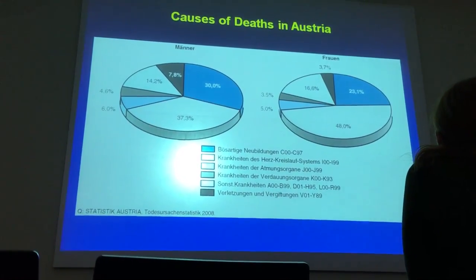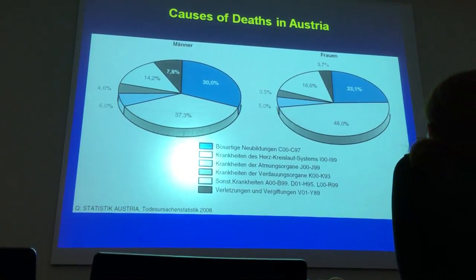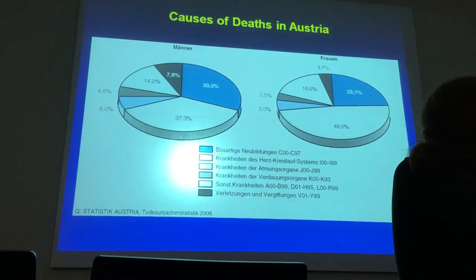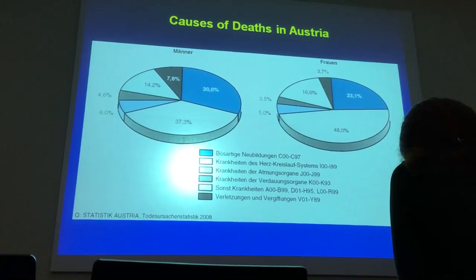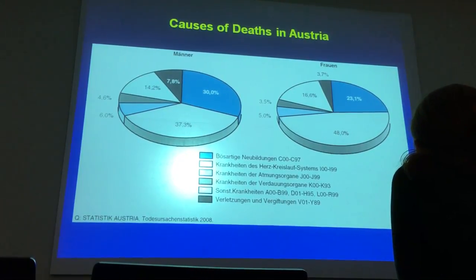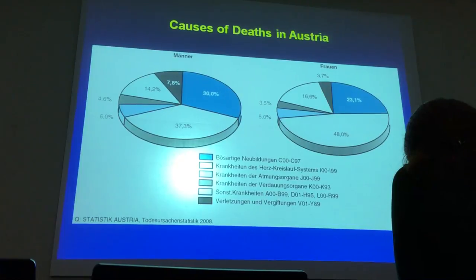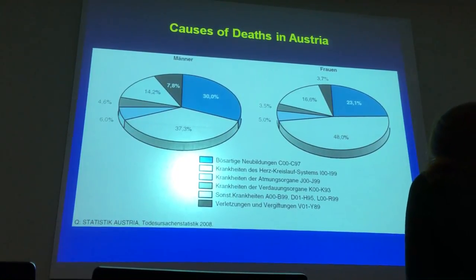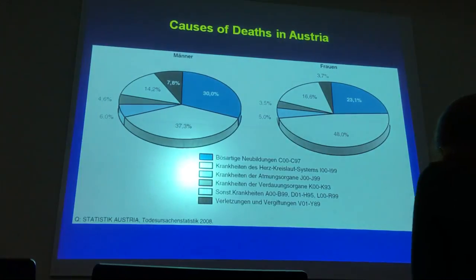Looking at different causes of death in Austria, gender-based — male on the left, female on the right — you can see that malignant diseases are responsible for 30% of deaths in men and 23% in women. This is the second most likely cause of death in Austria and the Western world after cardiovascular disease. The incidence is increasing for different reasons, the main one being that the population is becoming older, and many malignant diseases are diseases of the elderly.